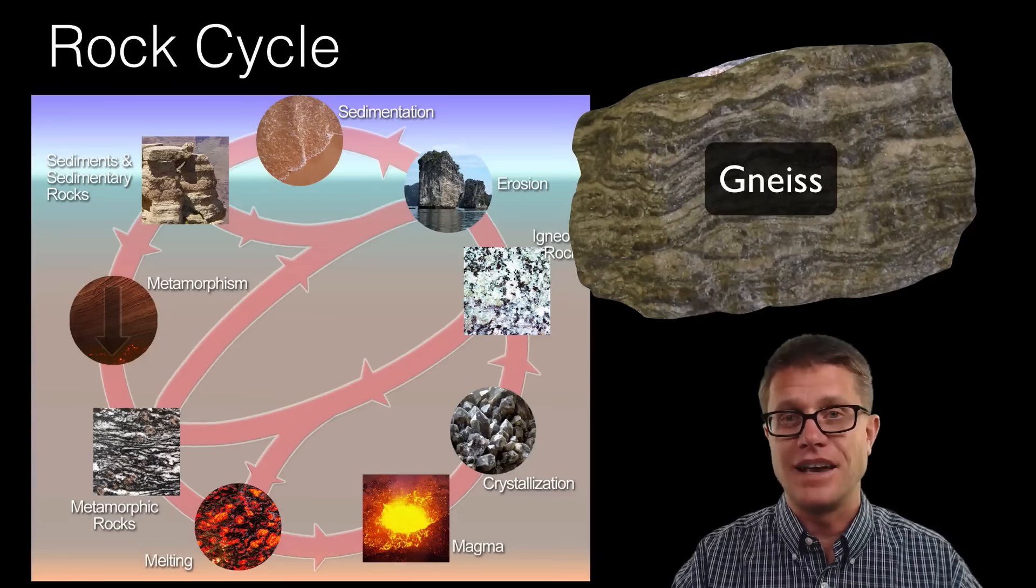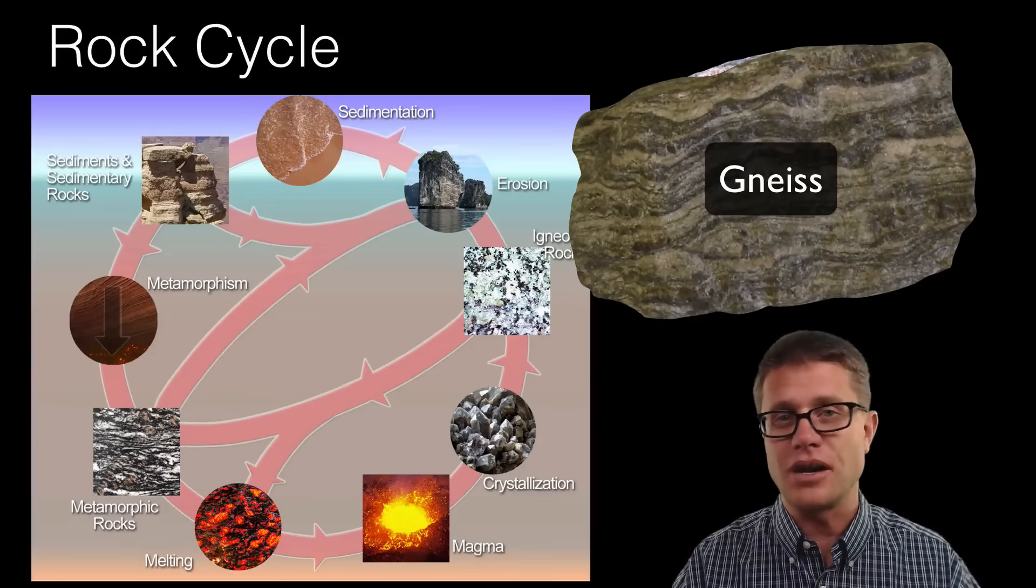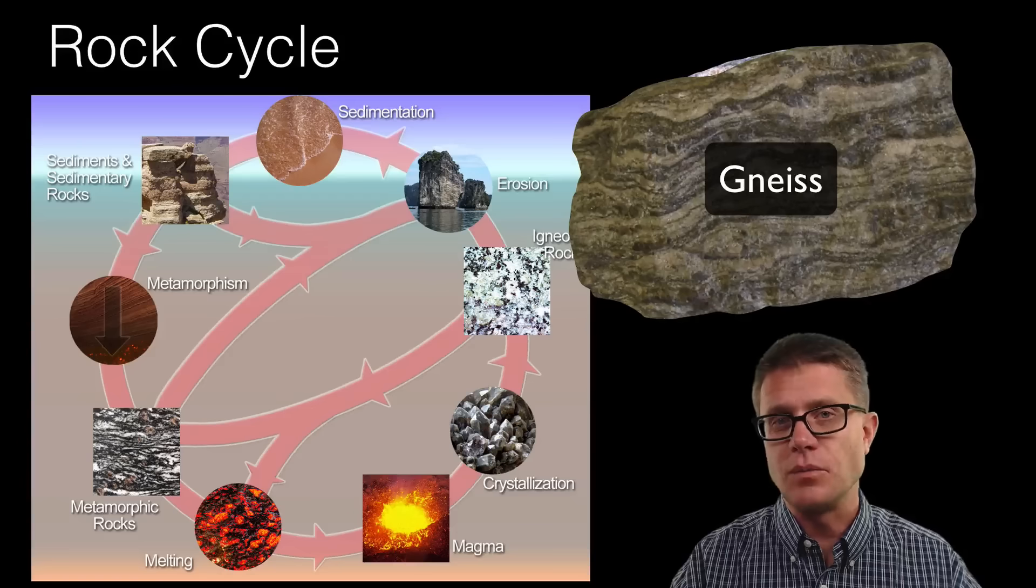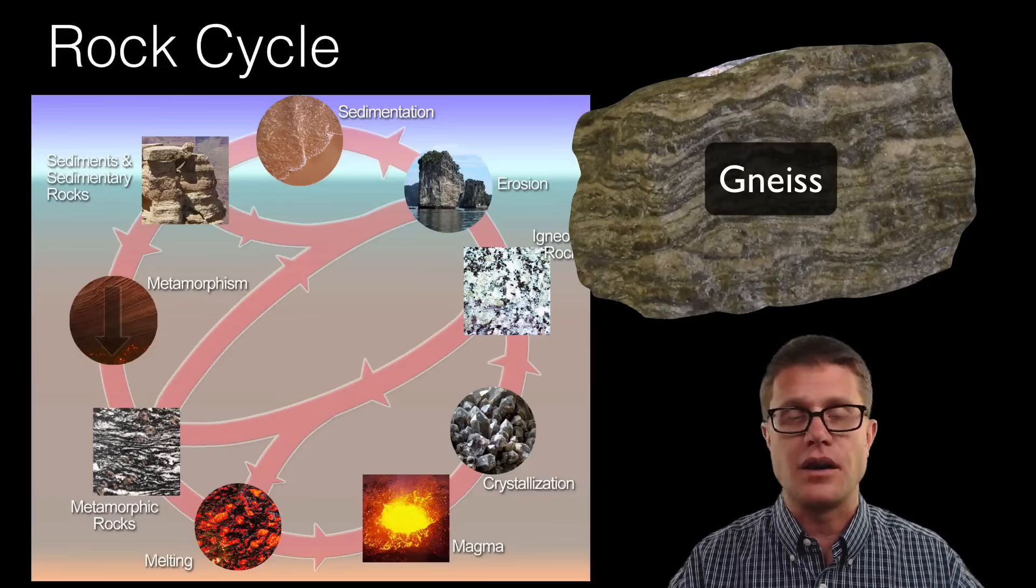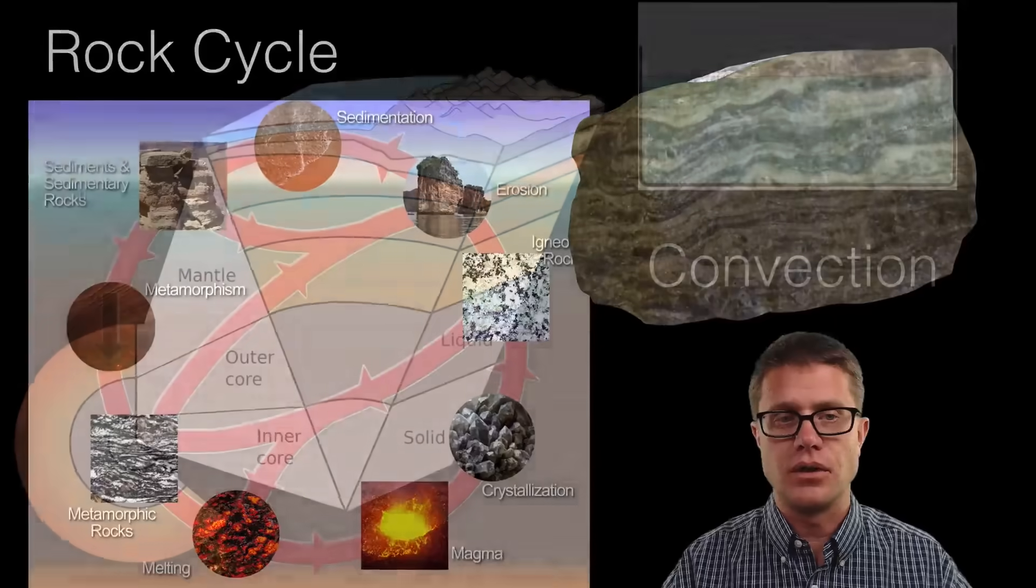And so gneiss, it is a type of metamorphic rock that is formed by the squeezing of granite. Now you can see those minerals are still there, but it has a different shape. And so the rocks on our planet are continually recycled over and over and over again.